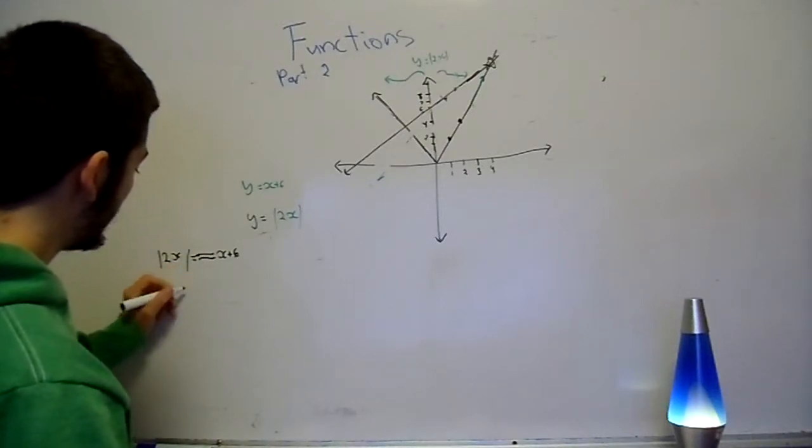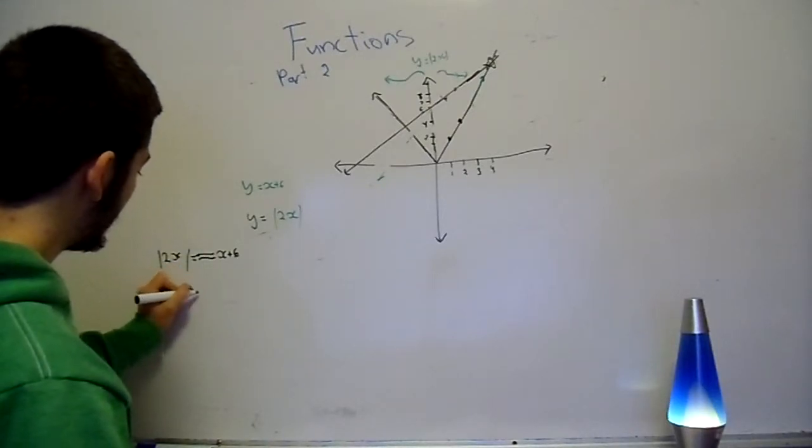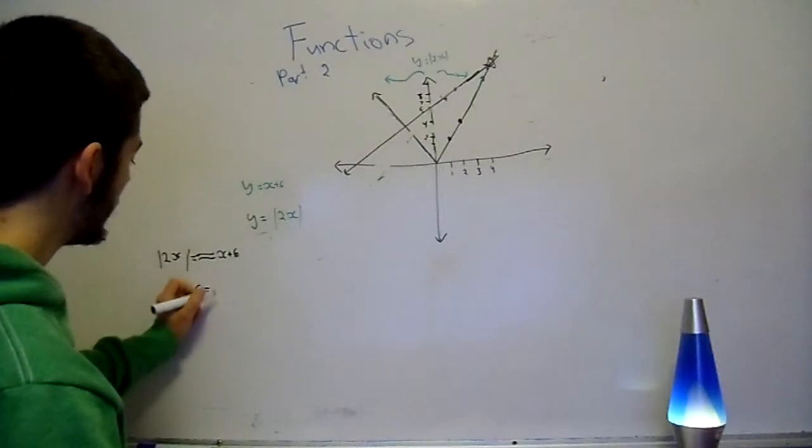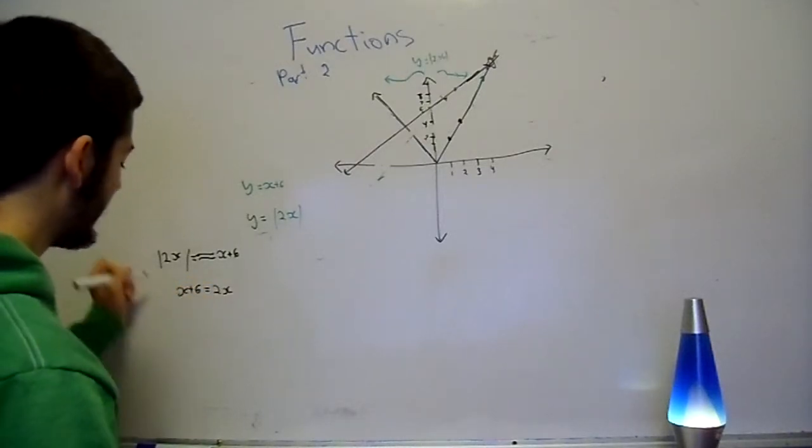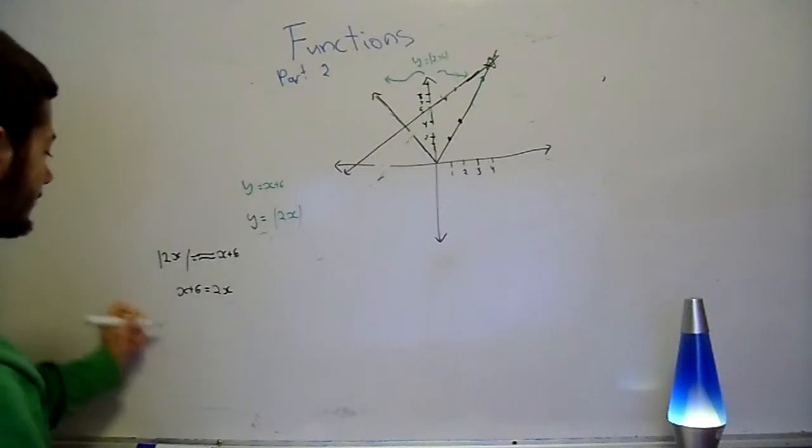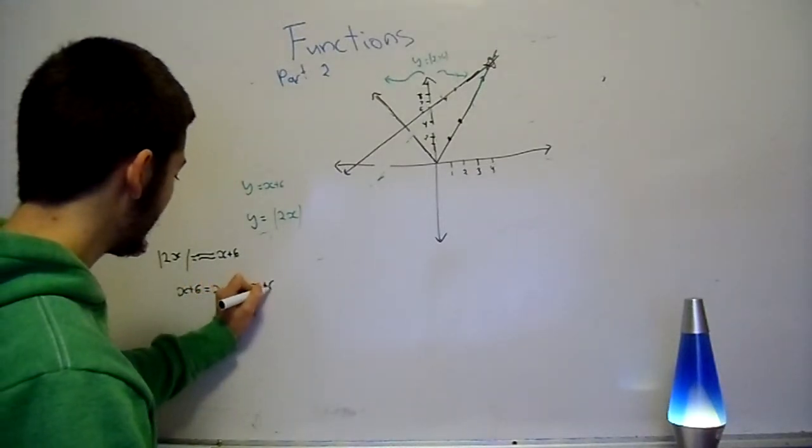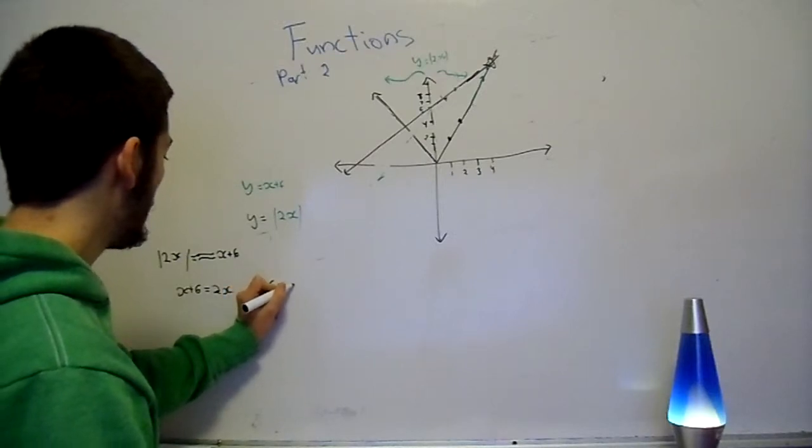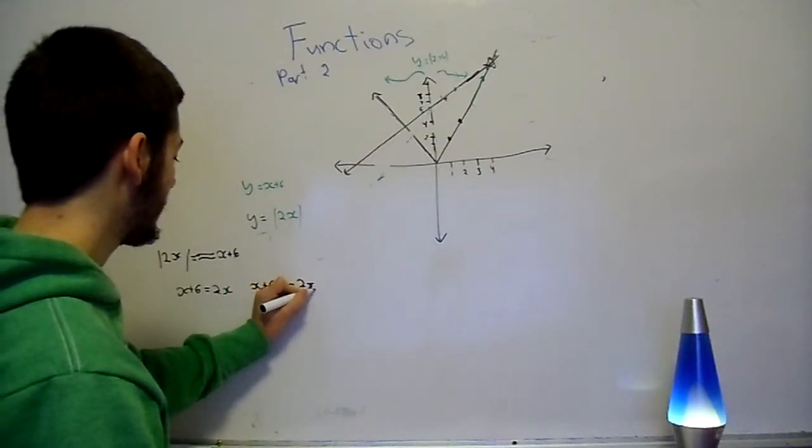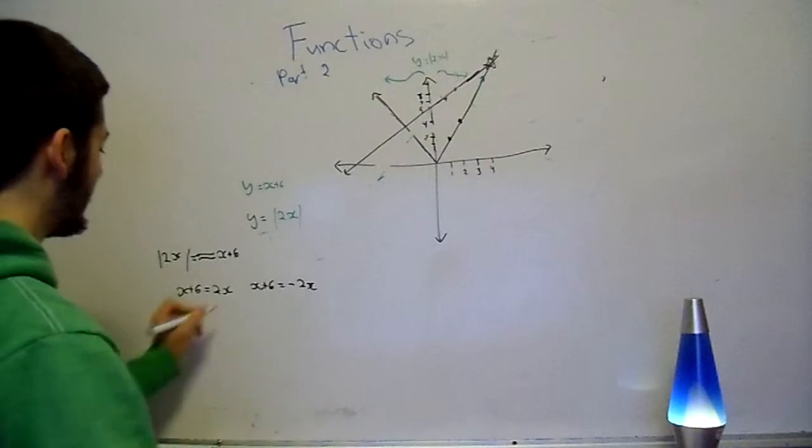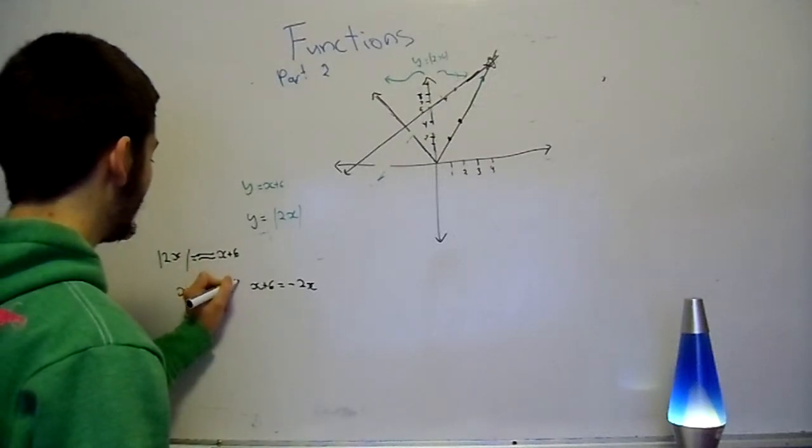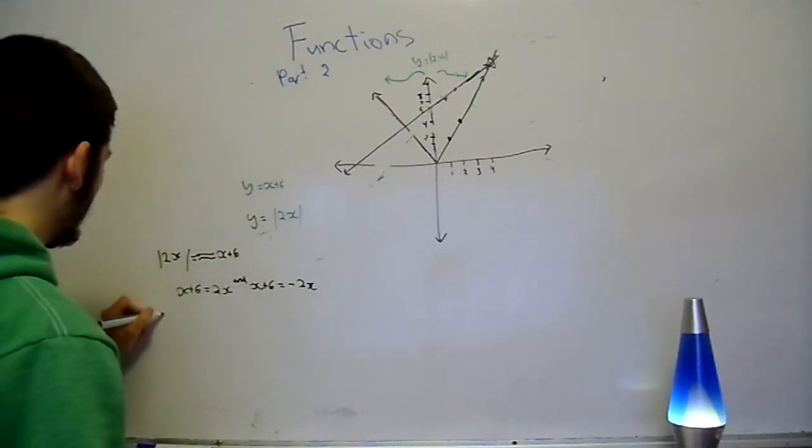So then we can write this out as x plus 6 is equal to 2x. And of course, the other part of the absolute value is x plus 6 is equal to minus 2x. Okay? So we have two of these values. So we'll write like and in between.